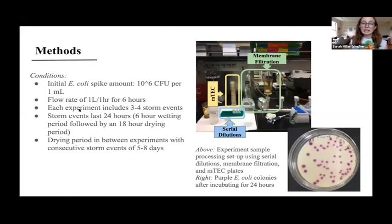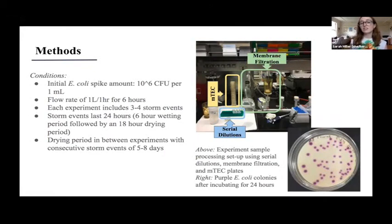Our initial E. coli spike amount was 10^6 colony forming units per milliliter of sample, with a flow rate of one liter per hour for six hours. Each experiment included three to four storm events where a storm event lasts 24 hours — six hours are the wetting period where water flows through the columns, followed by an 18-hour drying period with no water flow. Between each experiment, we had a drying period of about five to eight days with no water flowing through the columns.